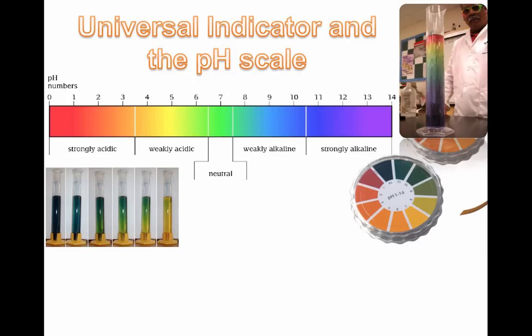Pure water is actually neutral, so if you're drinking bottled water and you test it, it's often going to be around pH 7. Our saliva is in this range as well. We talked about how stomach contents contain acid - if we were to test our stomach acid, we would find it's pretty strong. We're going to talk more about that later.